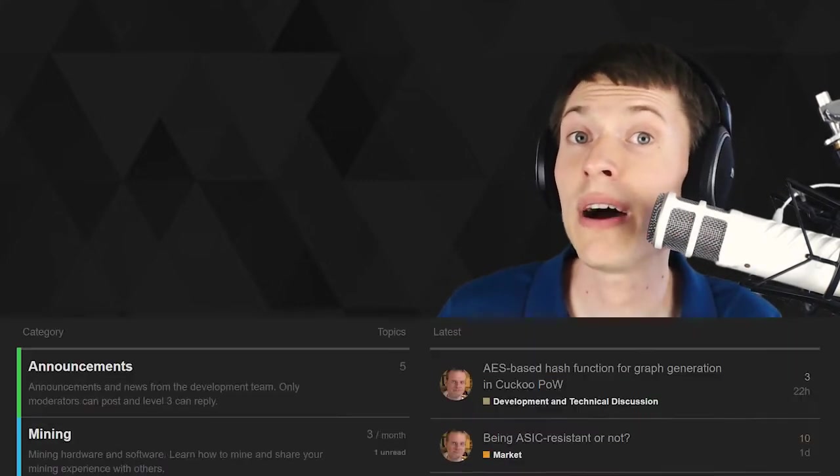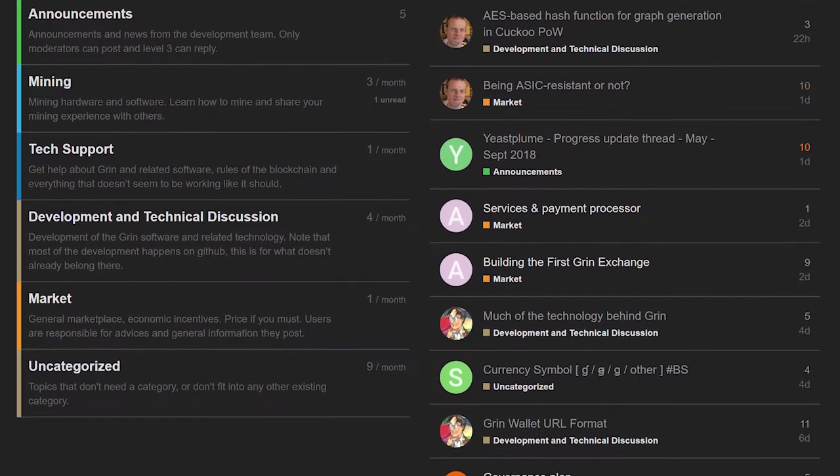Now Mimblewimble doesn't exist. It's just a description of the technology. The blockchain that's working to implement this is called Grin. And Grin doesn't exist either. It's under development. You can't actually buy these tokens. You can read about it. You can participate in the development. You can donate toward that support.